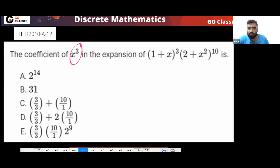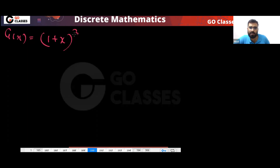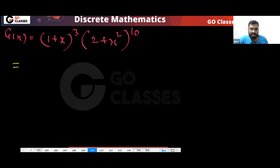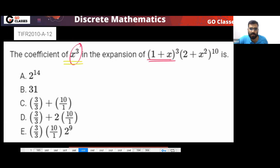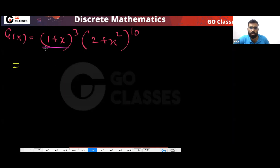So what we will do is open the first bracket. You can open (1+x)³ but you cannot easily open the other part. So first open (1+x)³. Your g(x) is (1+x)³ multiplied by (2+x²)¹⁰, and the question asks for the coefficient of x³. So open (1+x)³.